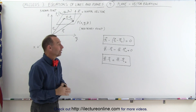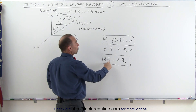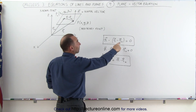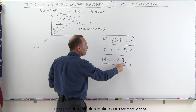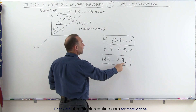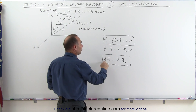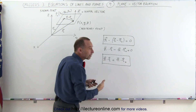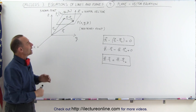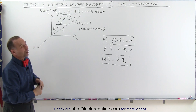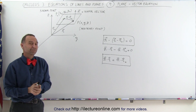To summarize: you take the arbitrary R vector pointing to any arbitrary point, you need one known point on the plane, and you need a normal vector — or orthogonal vector — to the plane to define a plane in three-dimensional space. And that's how it's done.